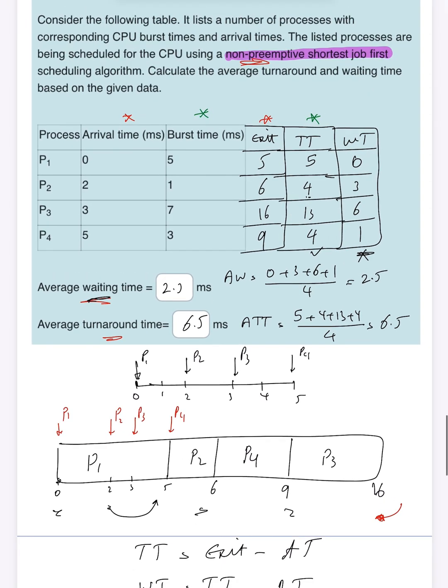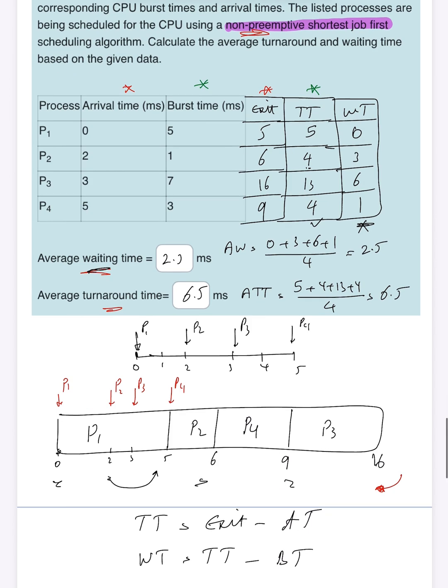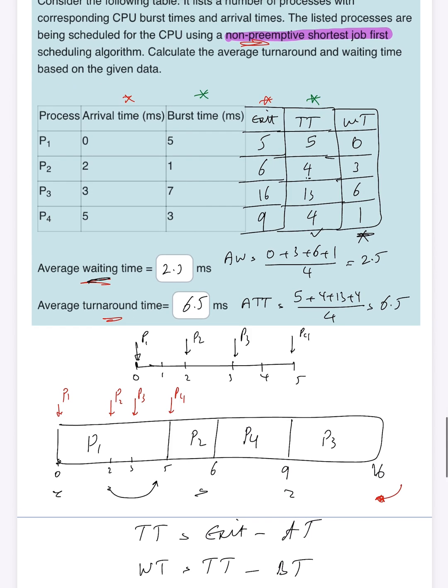That was the question regarding non-preemptive shortest job first numerical example, and I tried to explain it step by step. I hope I've managed to do so. Thank you very much.